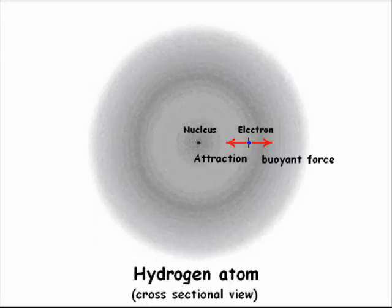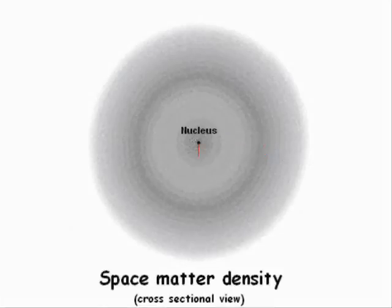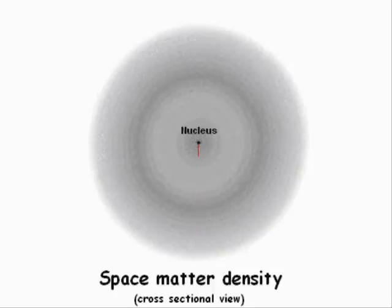Each of the different space matter regions with precise radii from the center of the nucleus has unique densities. Each of those regions acts as a resonant column with a unique natural frequency. We can call a resonant column in an atom a shell.